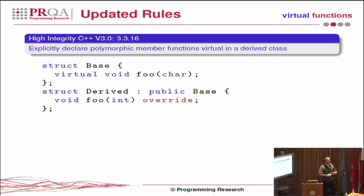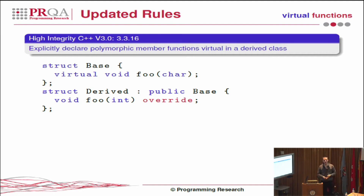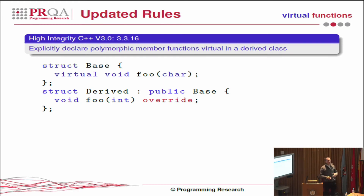Now of course we can put in the override special identifier. We're basically telling the compiler this overrides something in the base class, and so the compiler will check it at compile time, bringing the detection of this issue further up onto the desktop of the developer while he's writing his code.